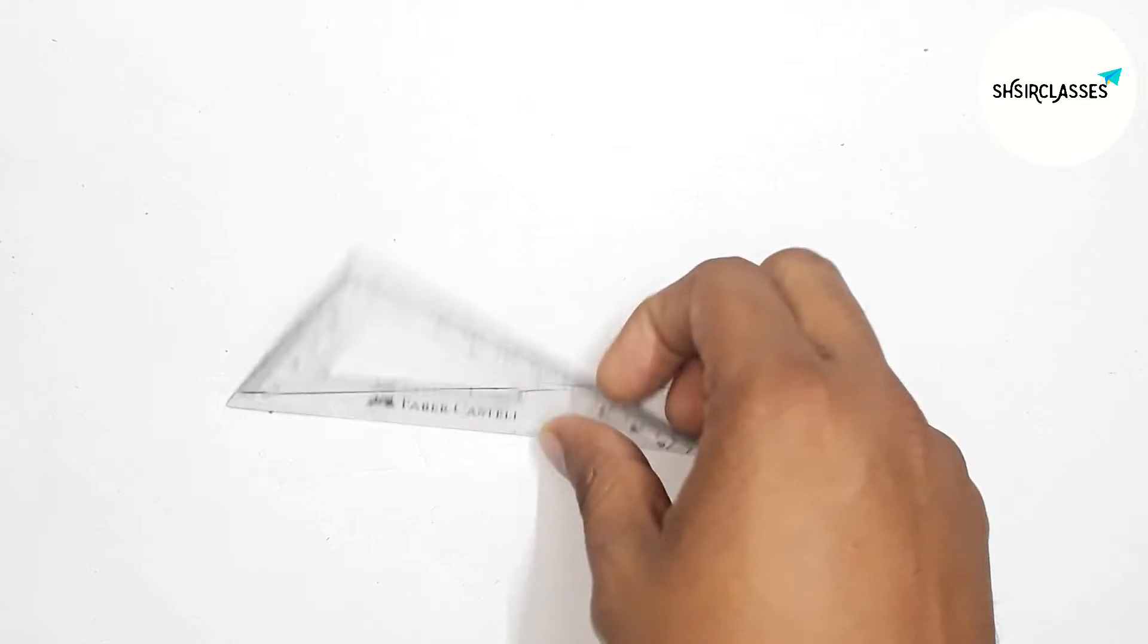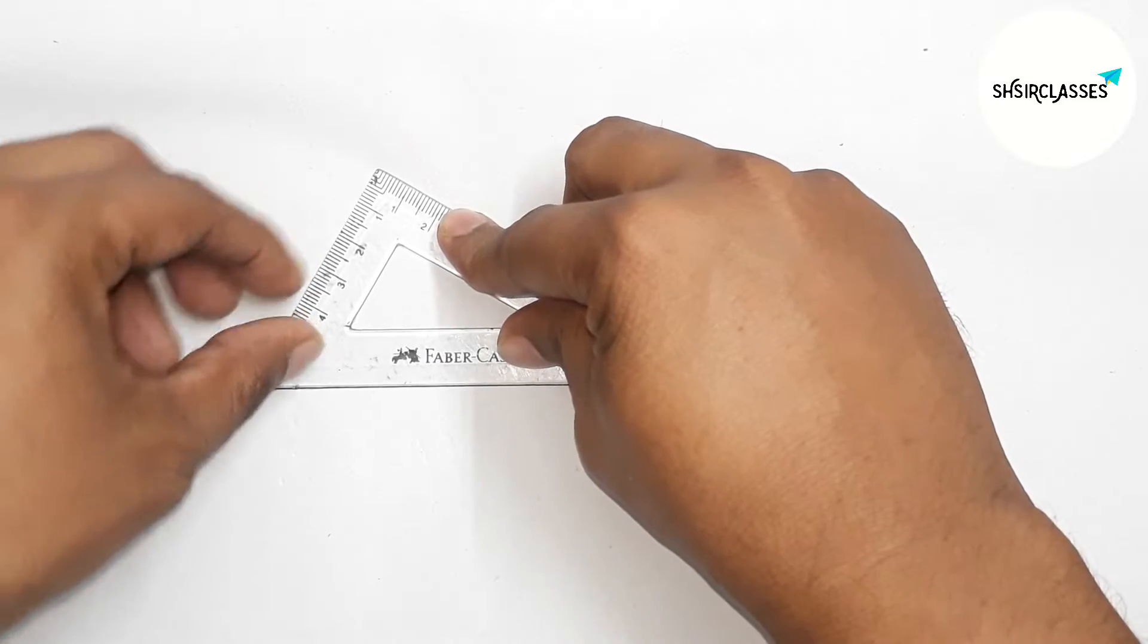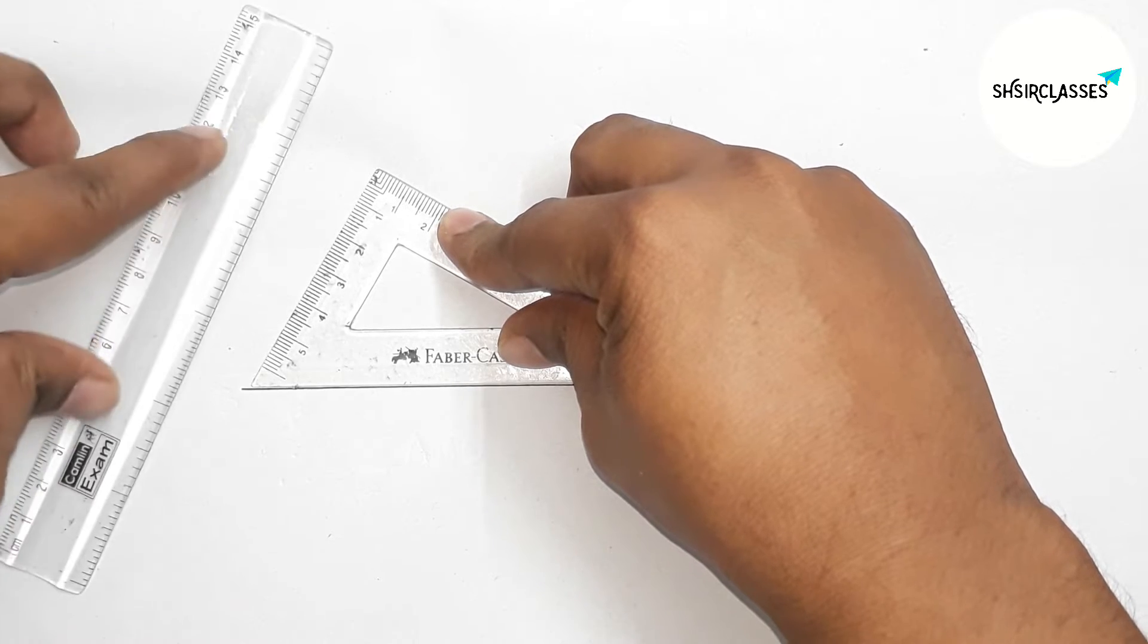Next, using one triangular ruler to draw 60 degree angle with the help of this triangular ruler. And this side gives 60 degree angle.